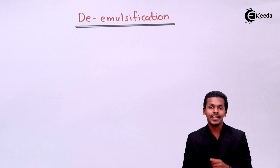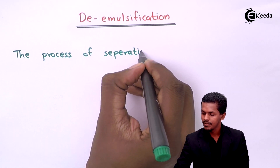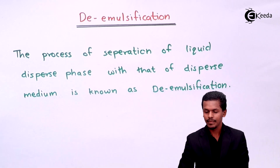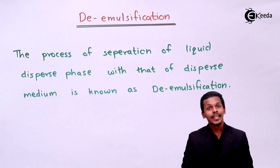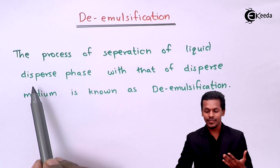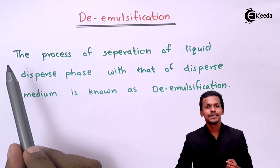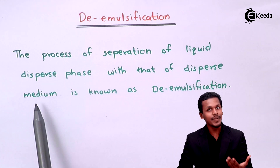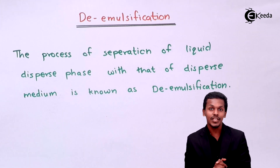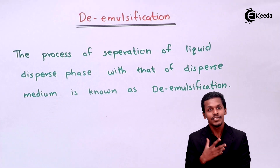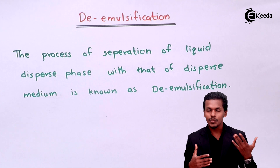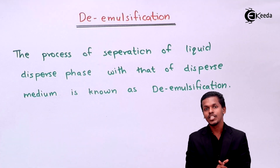Talking about demulsification, the definition is: the process of separation of the liquid dispersed phase from that of the dispersed medium is known as demulsification. In an emulsion, the dispersed phase and the dispersed medium are in contact with each other and form a stable solution because of the emulsifying agent. What we need to do is separate these two — the dispersed phase from the dispersed medium — and this kind of separation is known as demulsification.